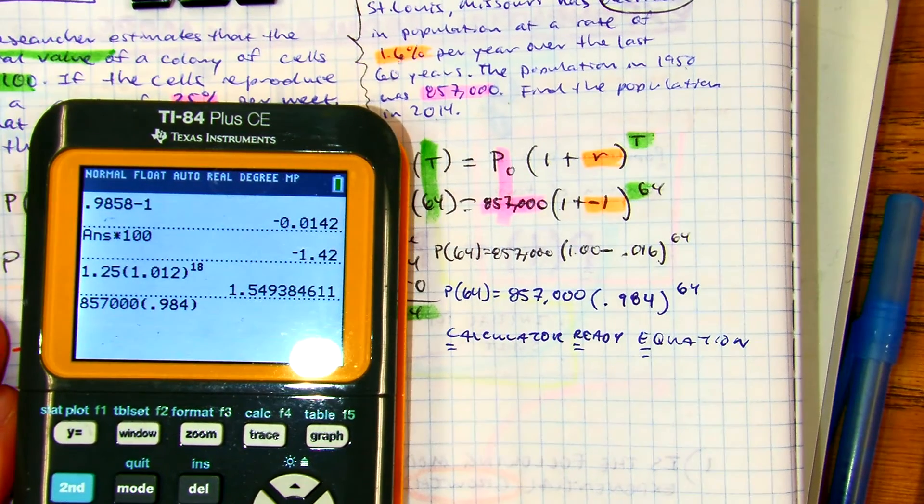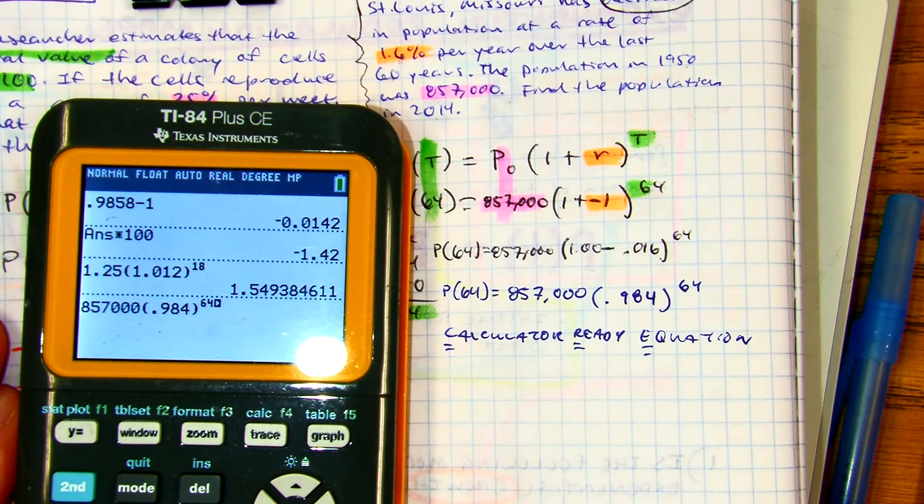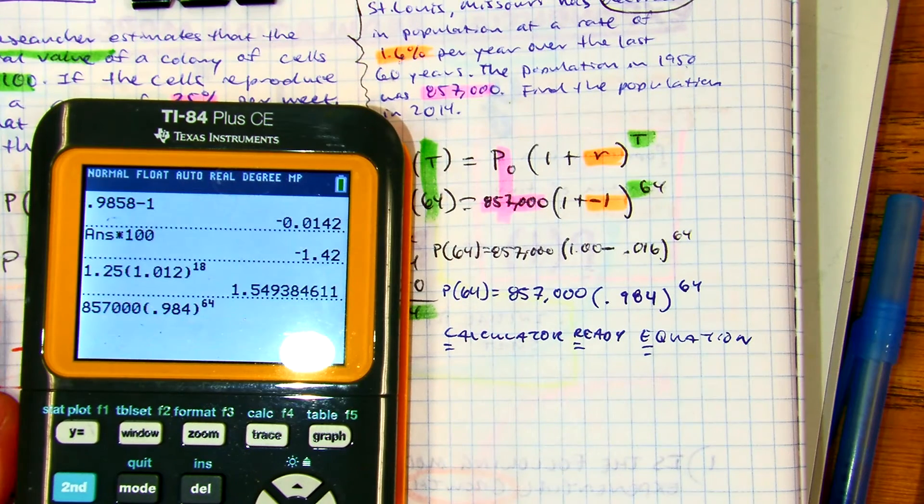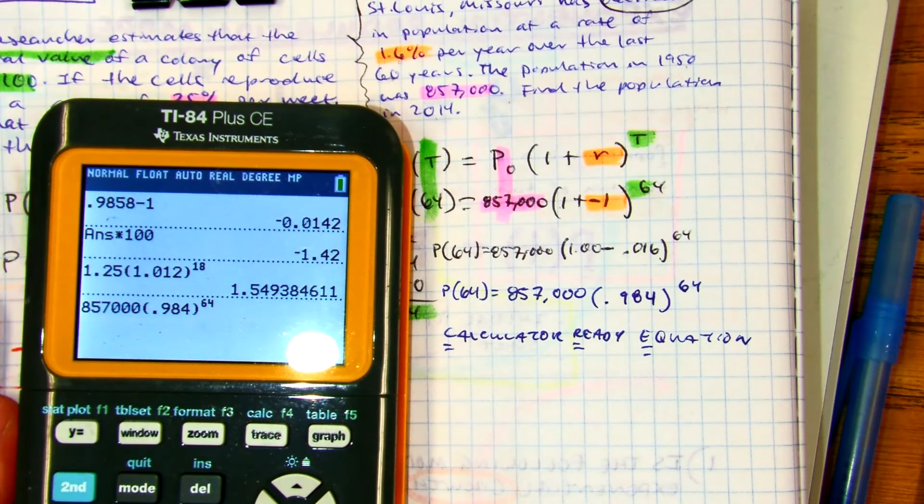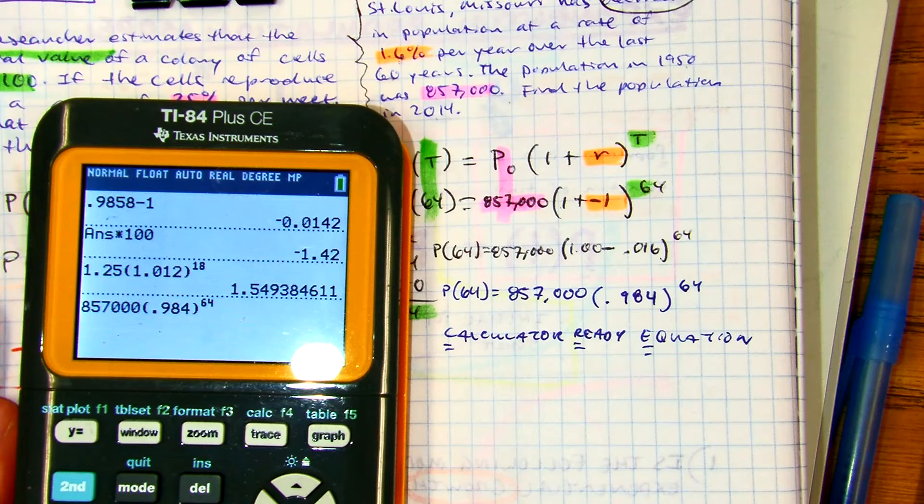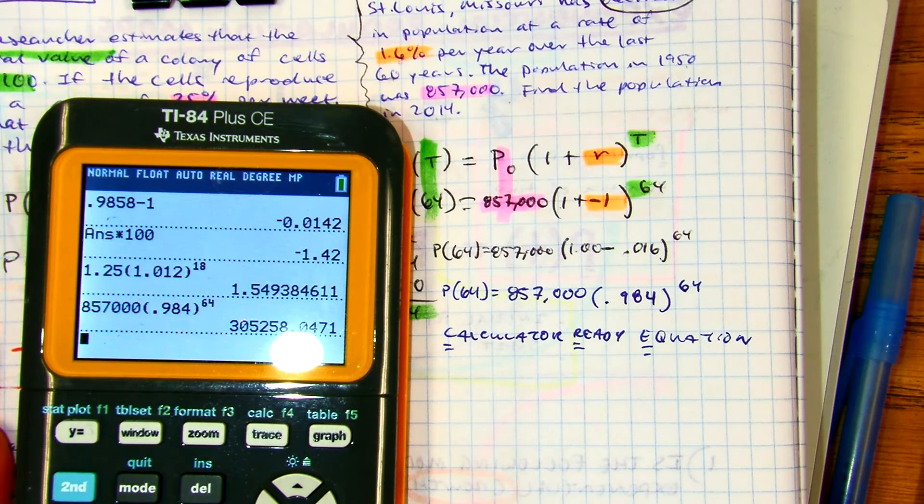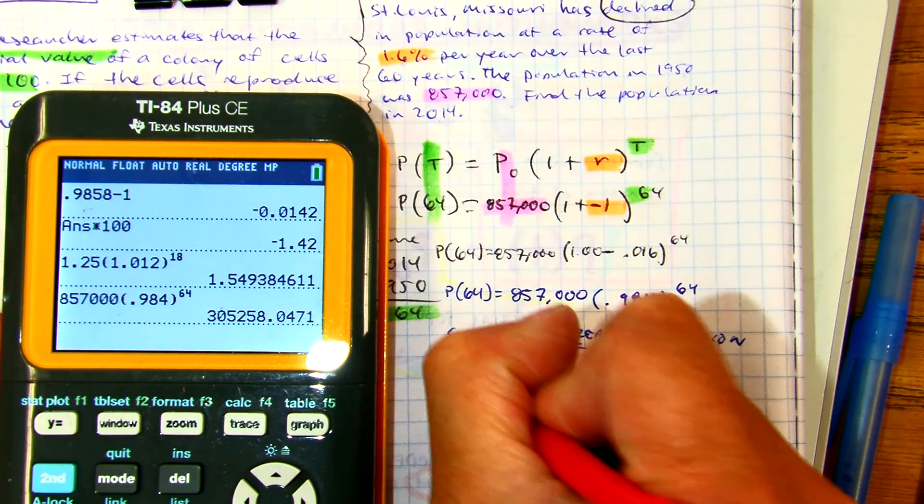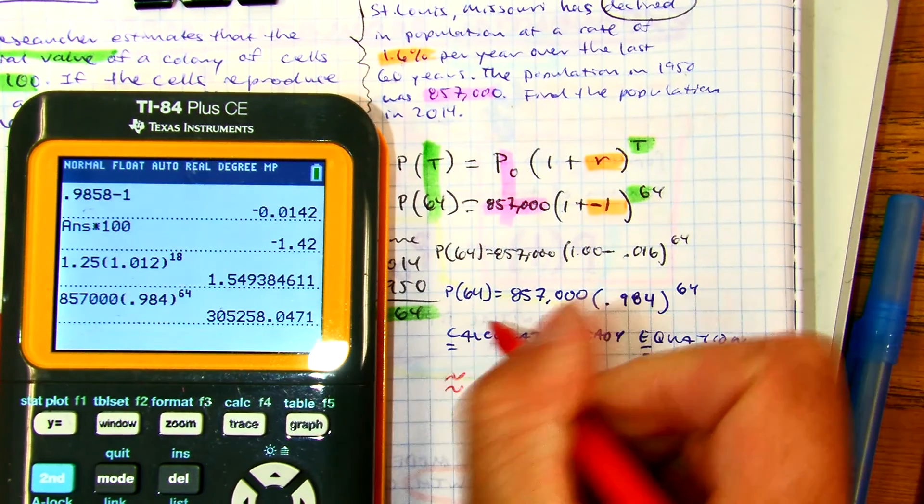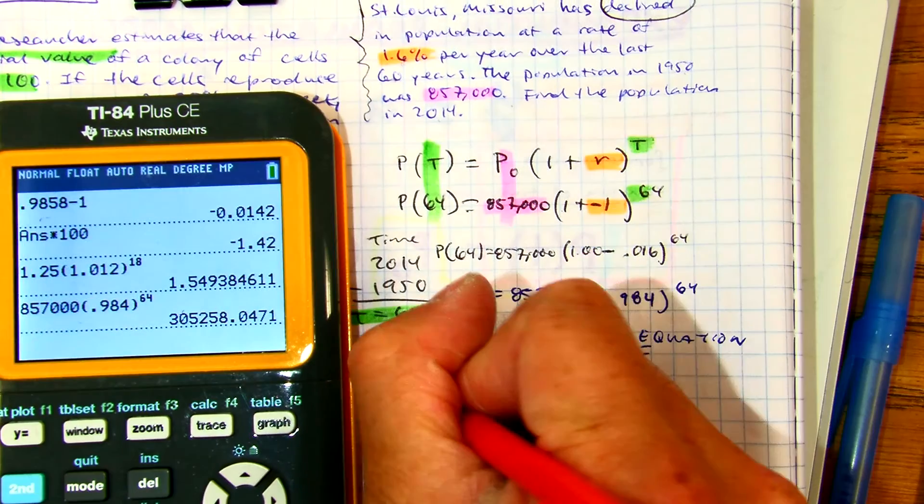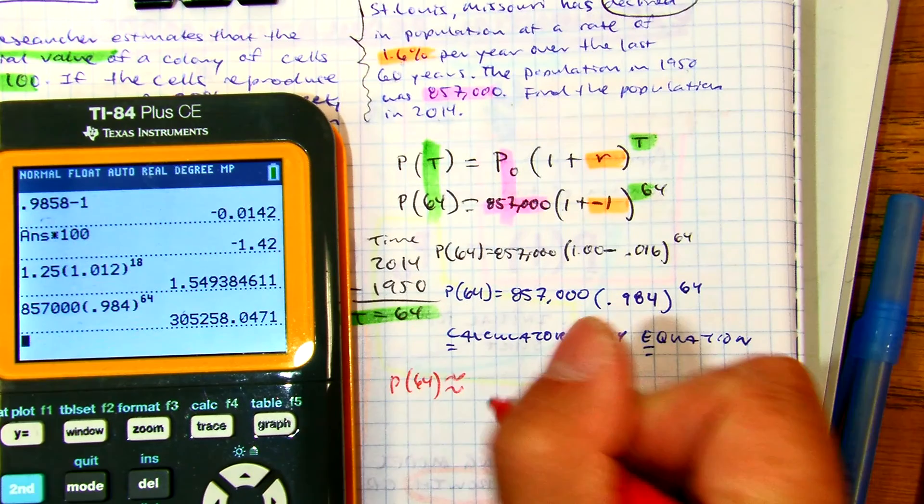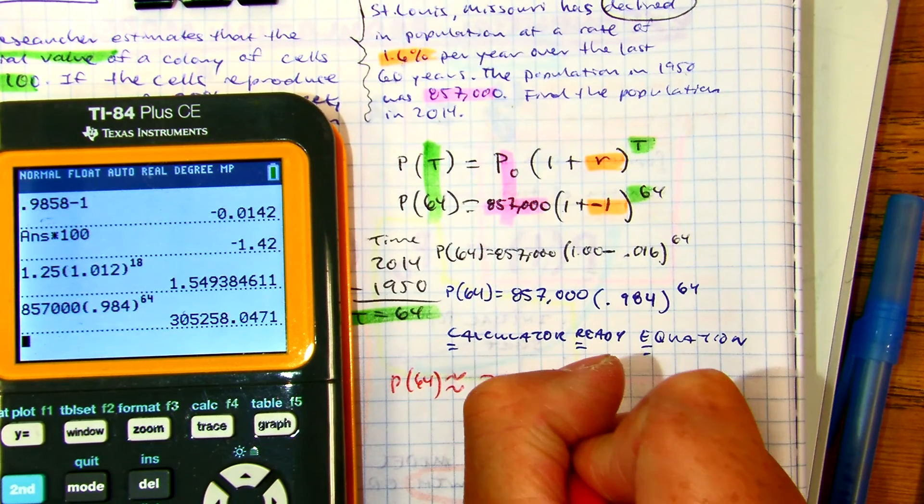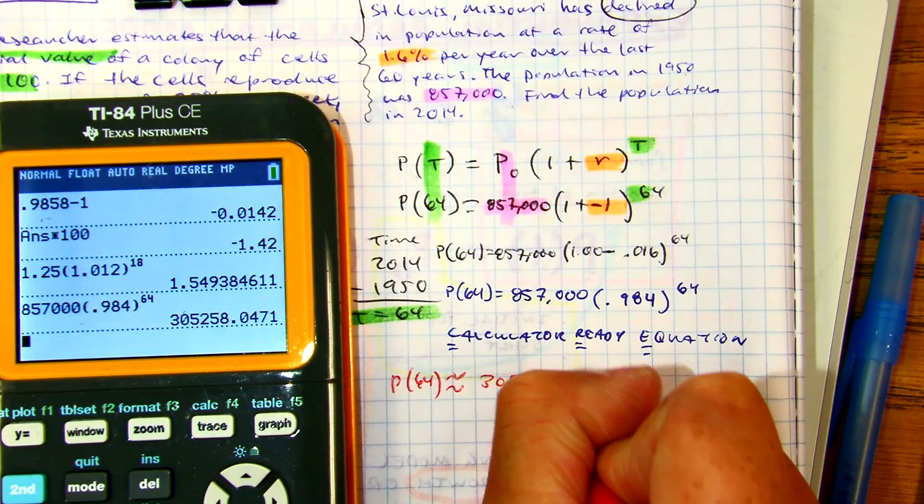And then the care button of a division. What do you expect the number to be before I press enter, more than or less than the original? So we approximate that in 64 years that there would be a population of 305,258 people.